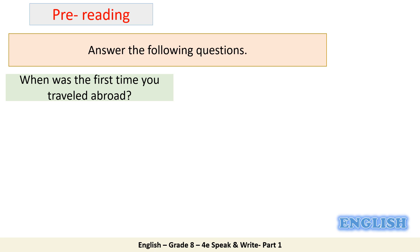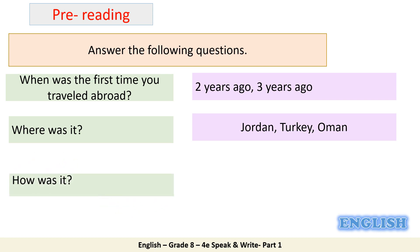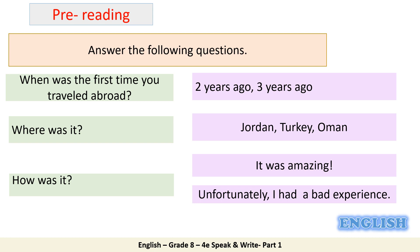Now you should answer the following questions. The first one: when was the first time you traveled abroad? You might say two years ago, three years ago, last year, whatever. The next one: where was it? You can say Jordan, Turkey, Oman. Third: how was it? You can say it was amazing, marvelous, perfect, or good. You can also say, unfortunately, I had a bad experience.